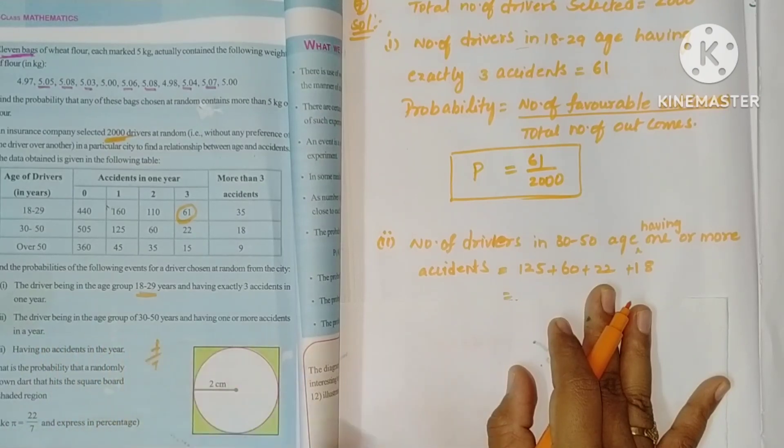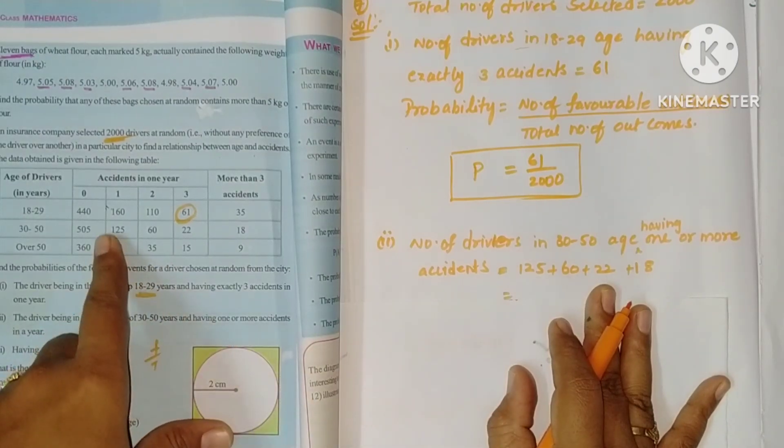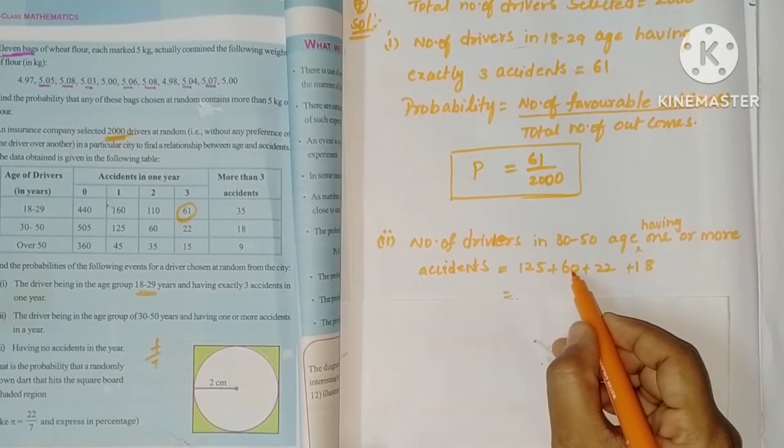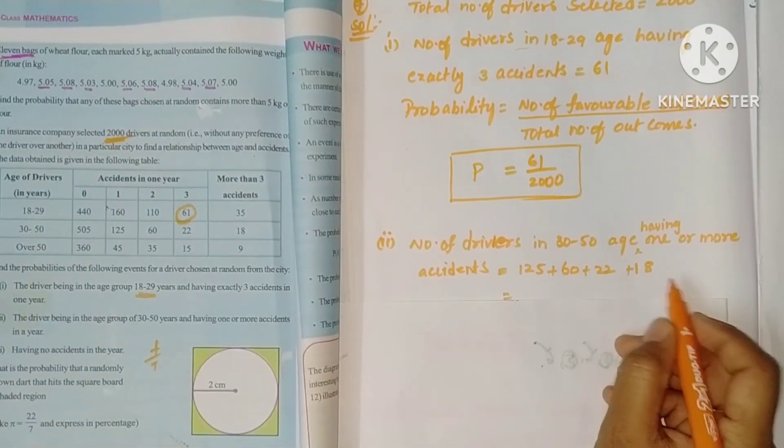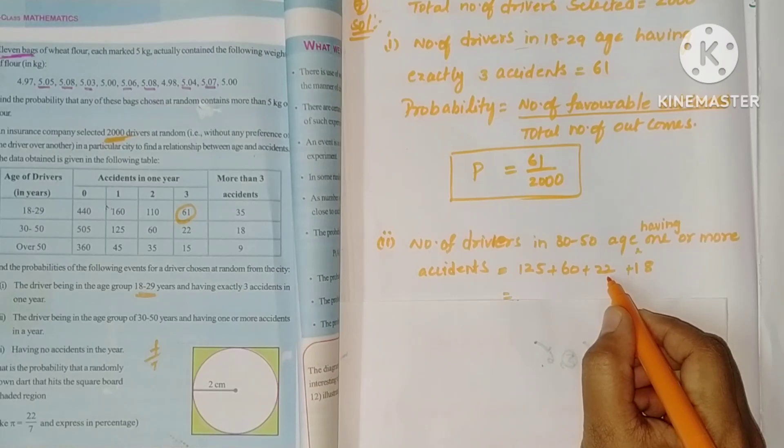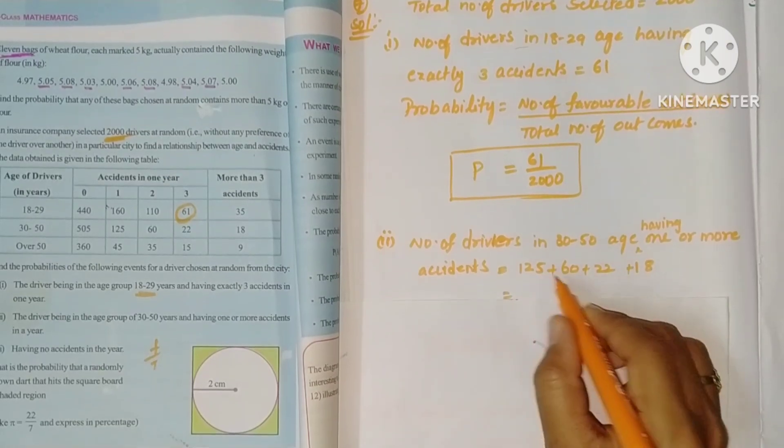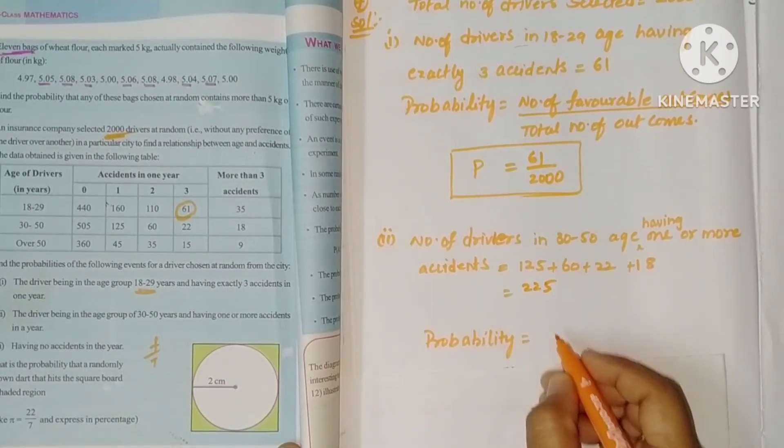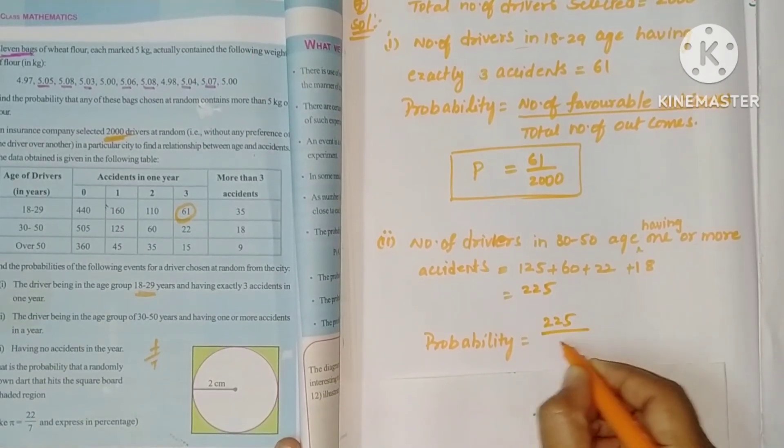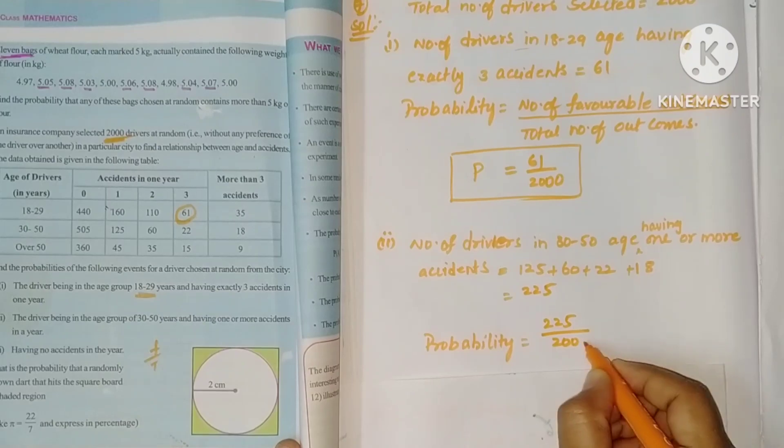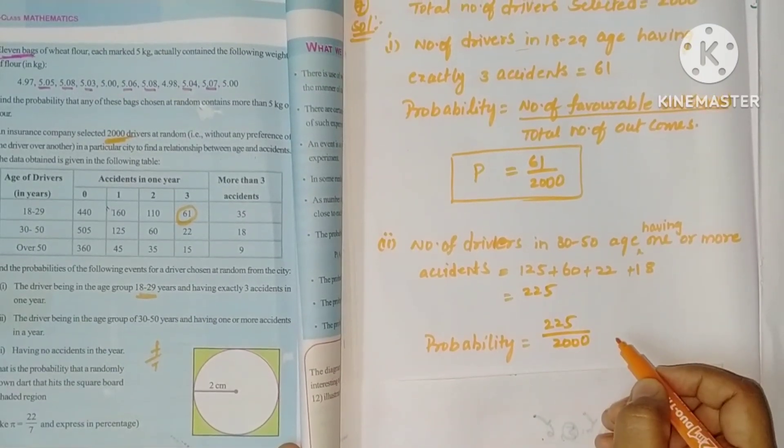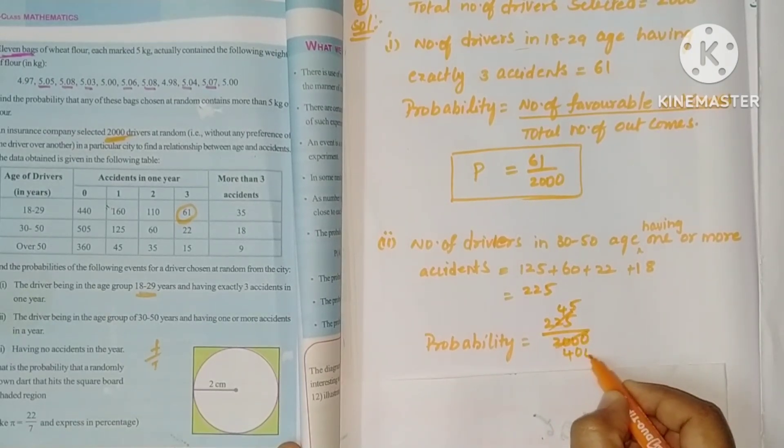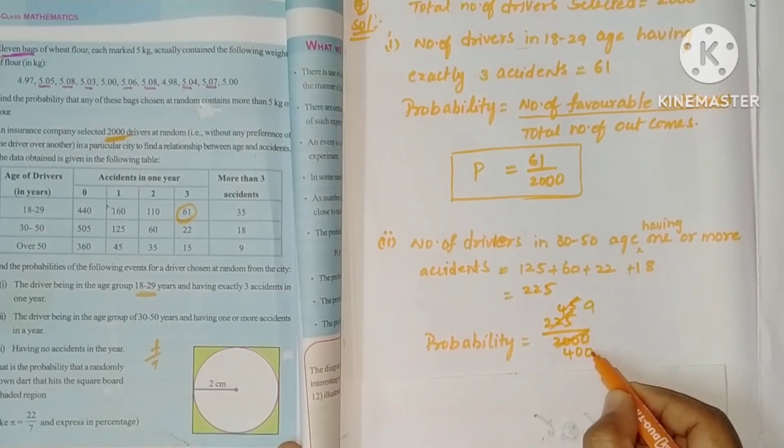Next, second question: The driver being in the age group 30 to 50 and having one or more accidents. One or more means not zero. So 125 plus 60 plus 22 plus 18. See, 18 plus 22 is 40, 100, 225. So this is favorable outcomes, 225. Now probability is 225 by 2000. We can cancel with 5: 45 by 400, again with 5: 9 by 80.